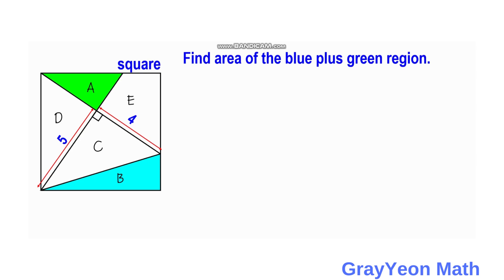We notice that the angle on the green triangle is actually 90 degrees because of the vertical angle theorem, so they are equal. Also note that this is a straight line, so this angle should also be 90 degrees, and this one as well. And since this is a square, all interior angles are 90 degrees.